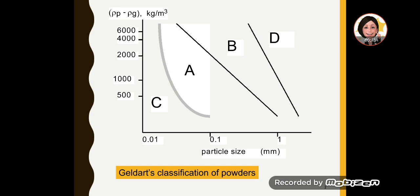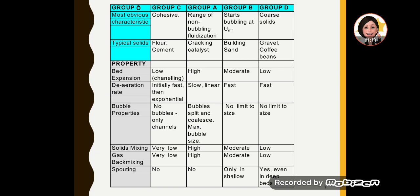This is the Geldart classification of powders. There are different types of classifications, but for fluidized bed applications, Geldart classification is a popular one. In this classification, powders or particles are divided into four groups: A, B, C, and D. These groups are divided according to particle sizes. Group C is the smallest particle size, followed by group A, then group B has a small range of particle size, and then group D for bigger particle sizes. Group A actually includes quite a bigger range of particle sizes.